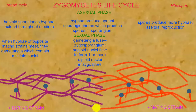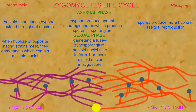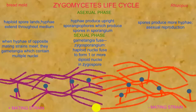When the gametangia fuse, it forms a zygosporangium, which contains zygospores. Zygospores may contain one or more diploid nuclei, resulting from the fusion of the haploid nuclei in the gametangium.